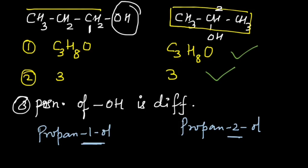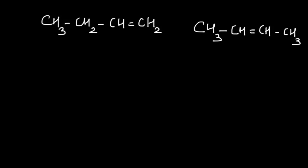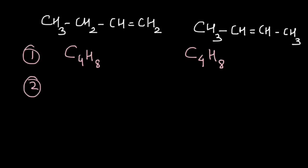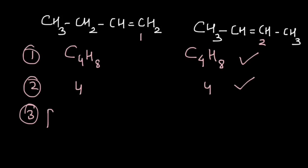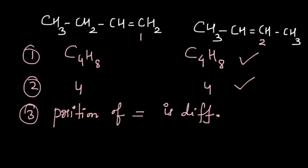Let's take another example, this time with position isomerism due to unsaturation. Look at these two compounds. The first compound is C4H8 and the second compound also has the formula C4H8. Both are straight chain with four carbon atoms each, so both criteria match. Now look at the position of the unsaturation: the double bond in the first compound starts at the first carbon atom, whereas in the second compound the double bond is on the second carbon atom. So the position of the double bond is different, and therefore these two compounds are position isomers.